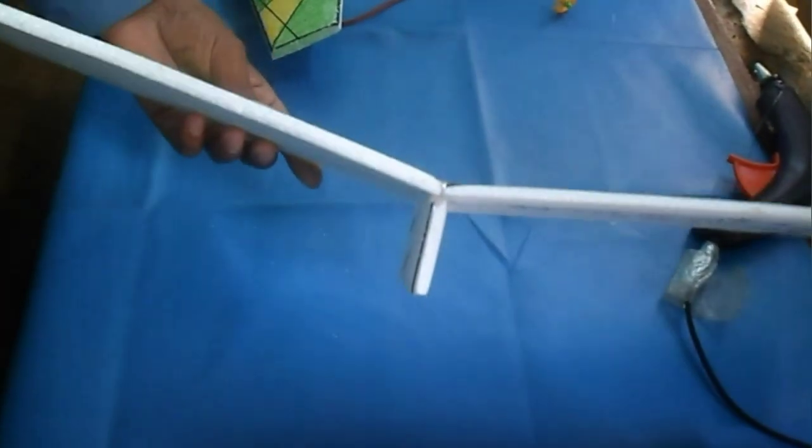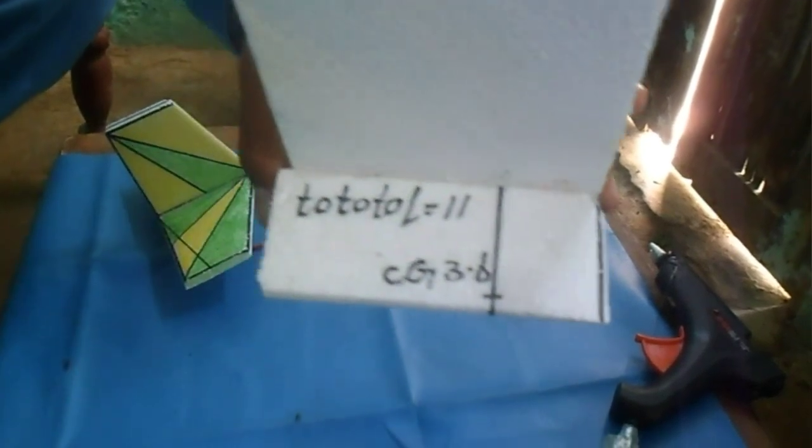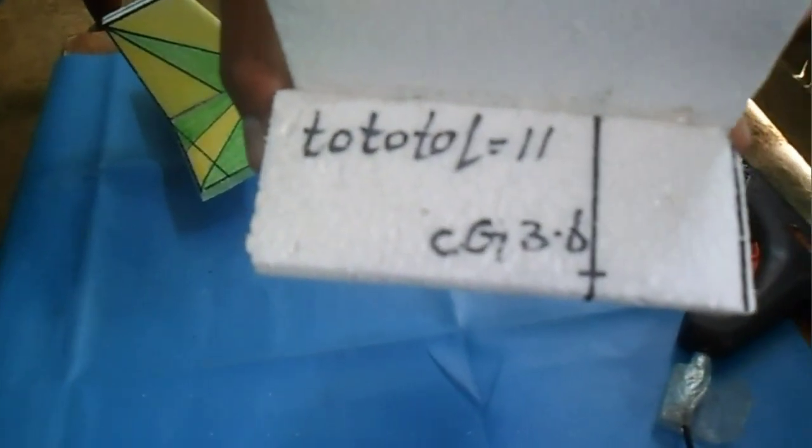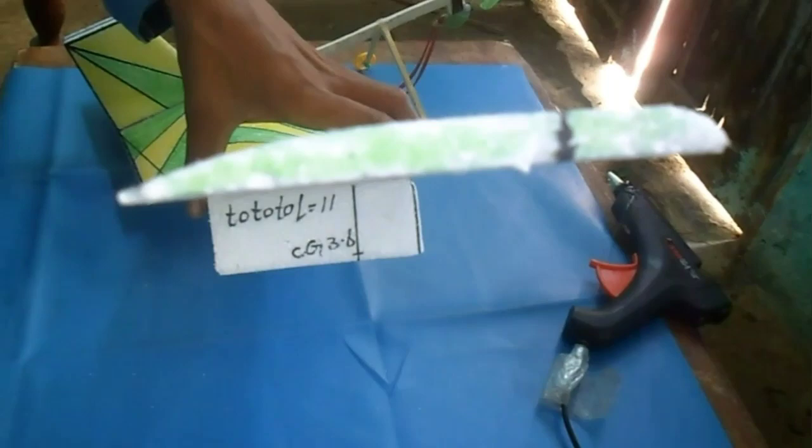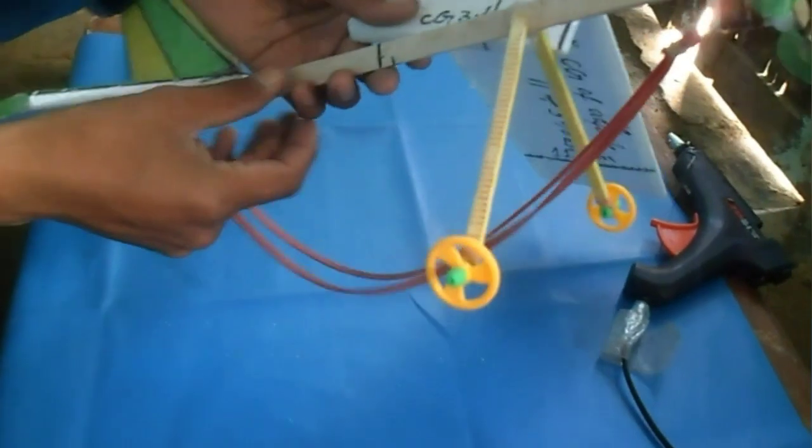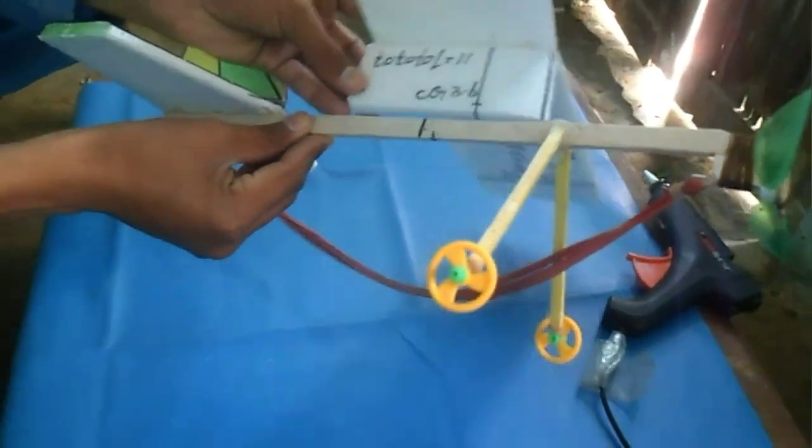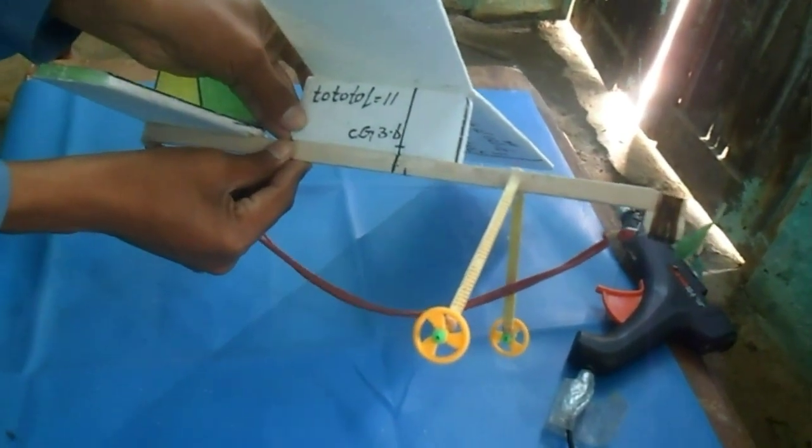The airplane length is 12 centimeters. Total length is 11 centimeters divided by 3 equals 3.6 centimeters for the CG. This point is the CG of the airfoils. Now we match these two CG points of the airfoils and the airplane together.